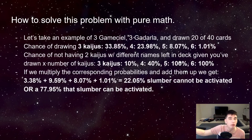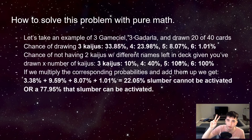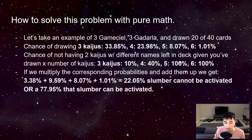We're here for math in Yu-Gi-Oh! Let's review Kaiju Slumber. You have to have two different names — two Kaijus with different names in your deck — to be able to activate the card. So how can we calculate that?